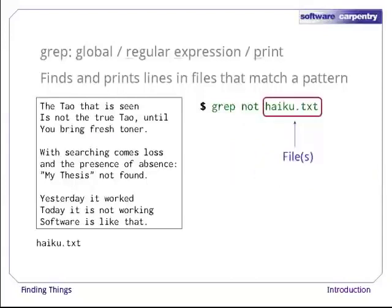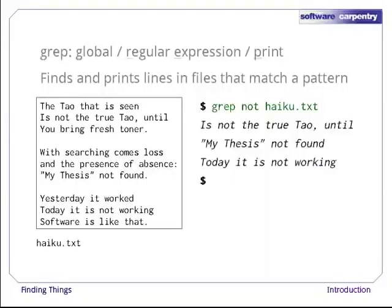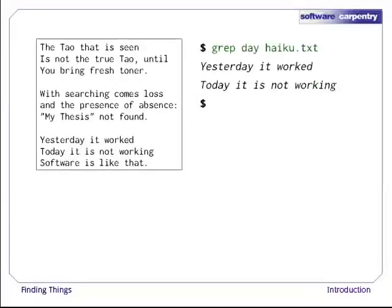Let's run the command grep not haiku.txt. Here, not is the pattern we're searching for — it's a pretty simple pattern, every alphanumeric character matches against itself. After the pattern comes the name or names of the files we're searching in. The output is the three lines in the file that contain the letters N-O-T. Let's try a different pattern: day. This time, the output is lines containing the words yesterday and today, which both have the letters D-A-Y.